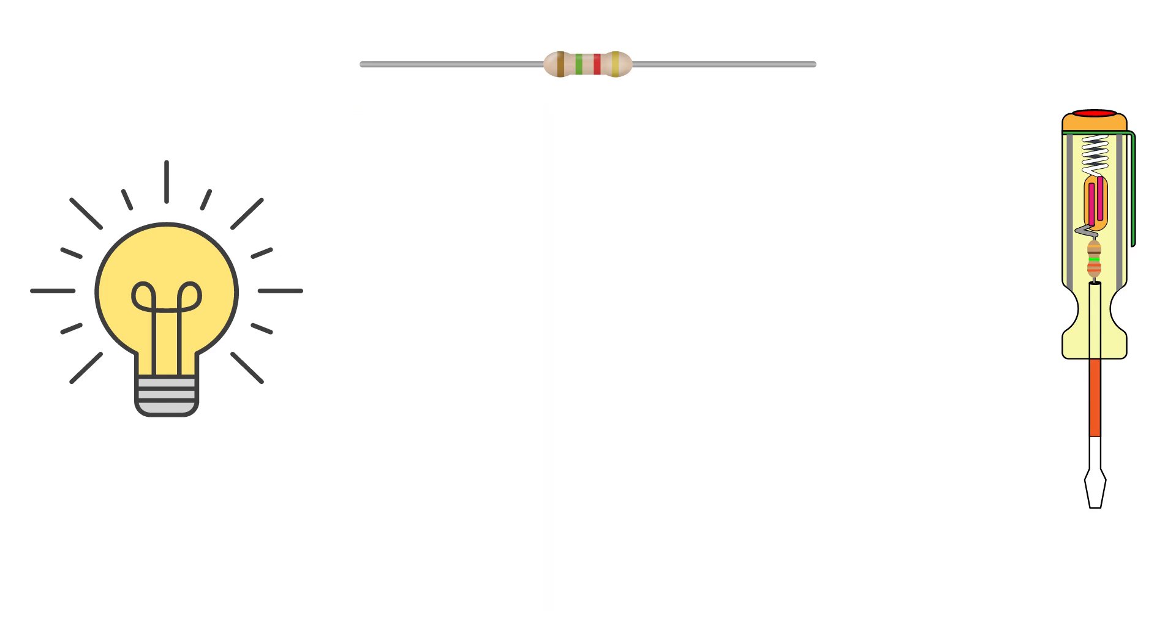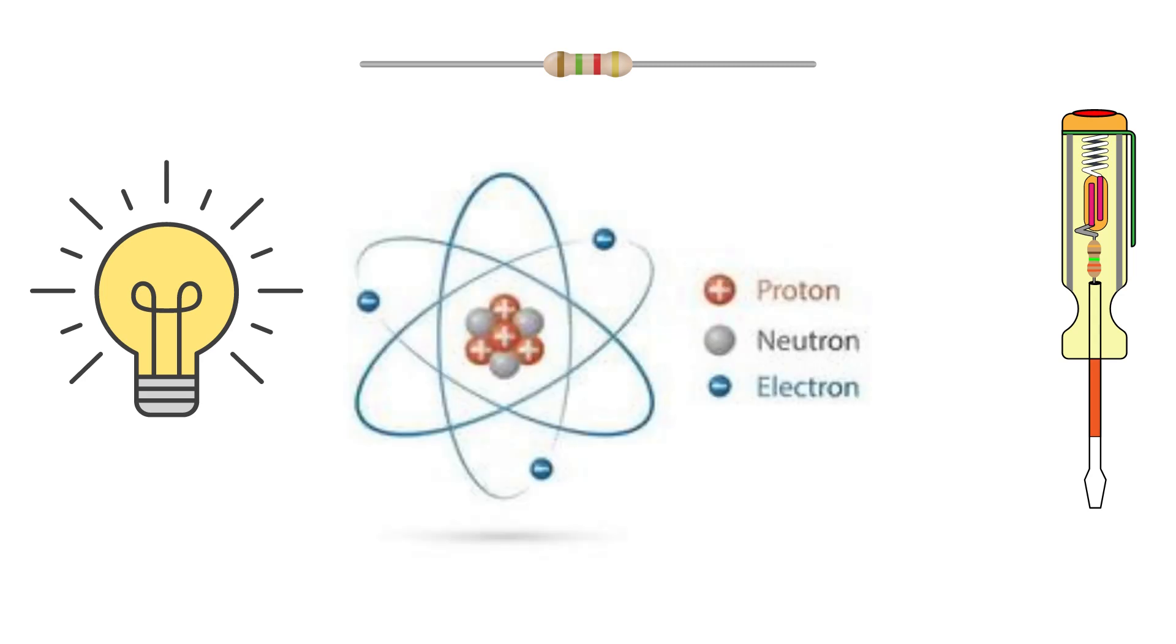See, to define current, it is the flow of charge per unit time due to free electrons. Now notice that I have emphasized on the word free electrons as it is different from the normal electrons that we have seen revolving in an atom.